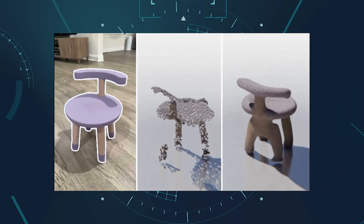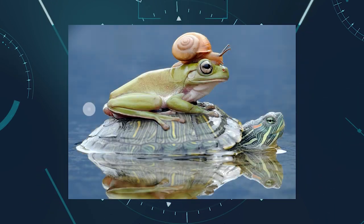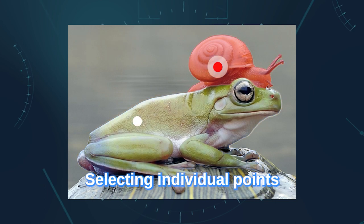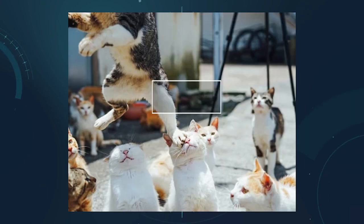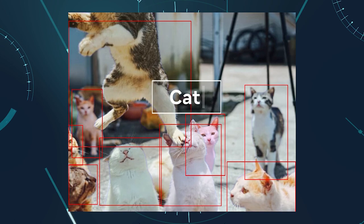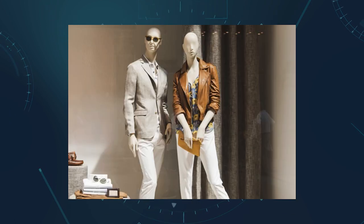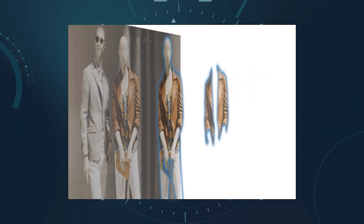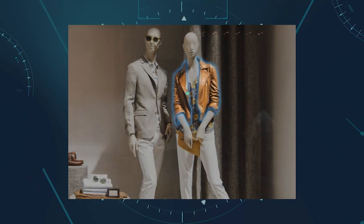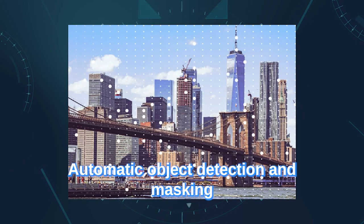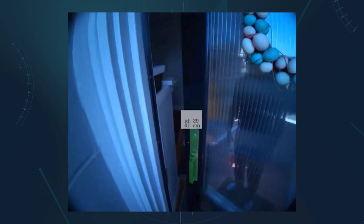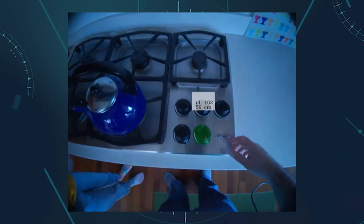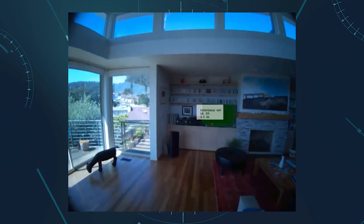Here are some of the SAM model's capabilities. Users may quickly and easily segment objects by selecting individual points to include or omit from the segmentation. A boundary box can also be used as a cue for the model. When uncertainty exists regarding the item being segmented, the SAM model can produce many valid masks — a crucial skill for solving segmentation in the real world. Automatic object detection and masking are now simple; after pre-computing the image embedding, SAM can provide a segmentation mask for any prompt instantly, enabling real-time interaction.